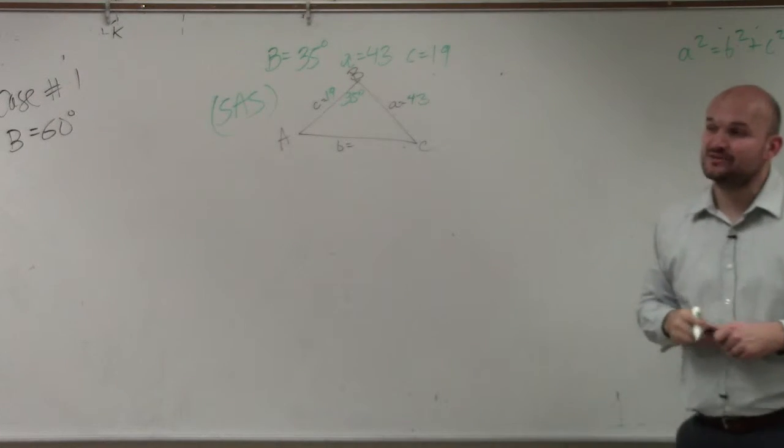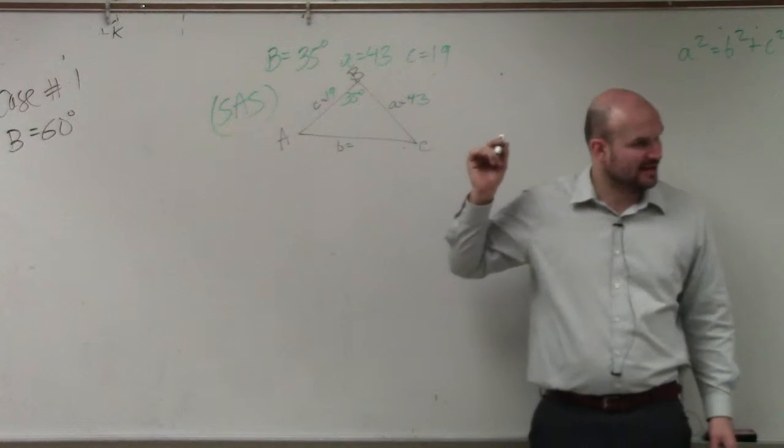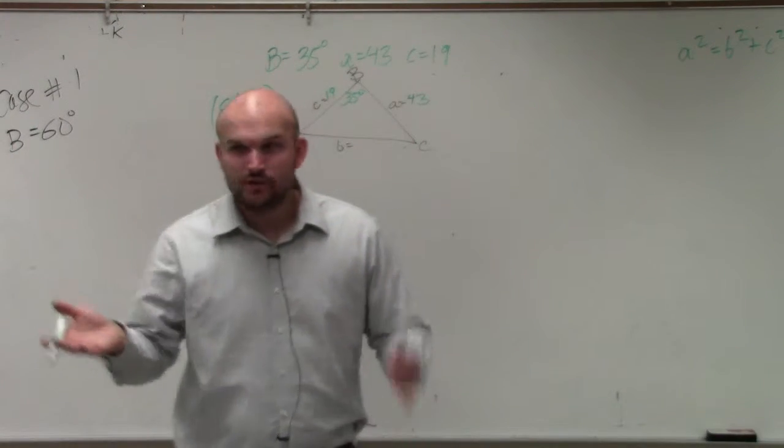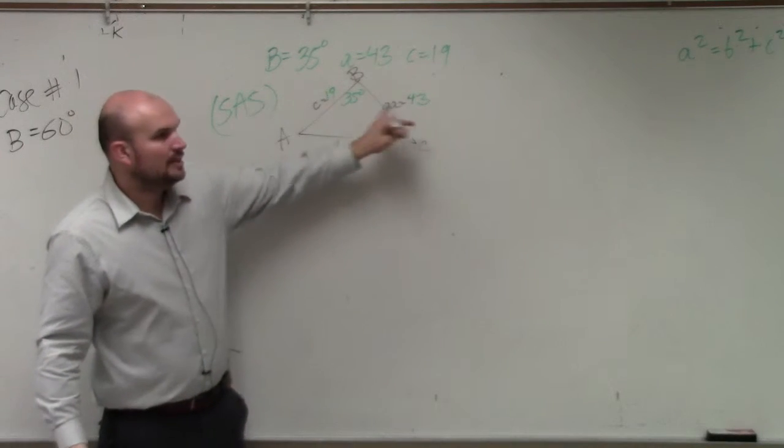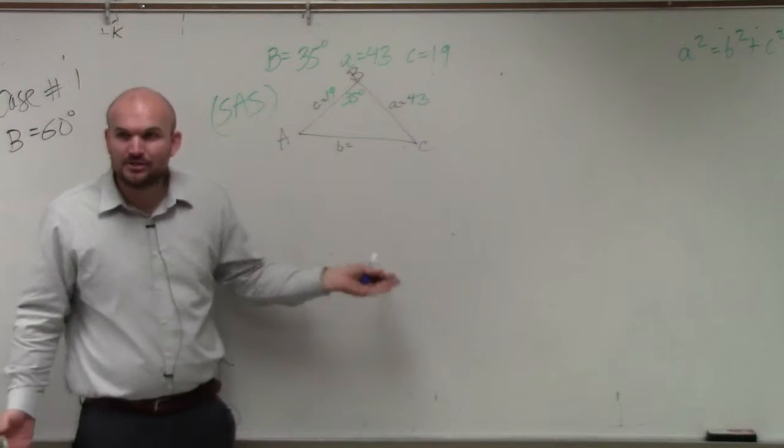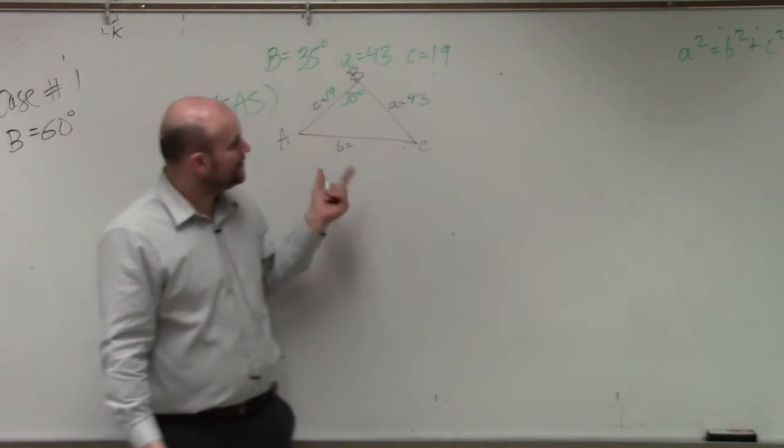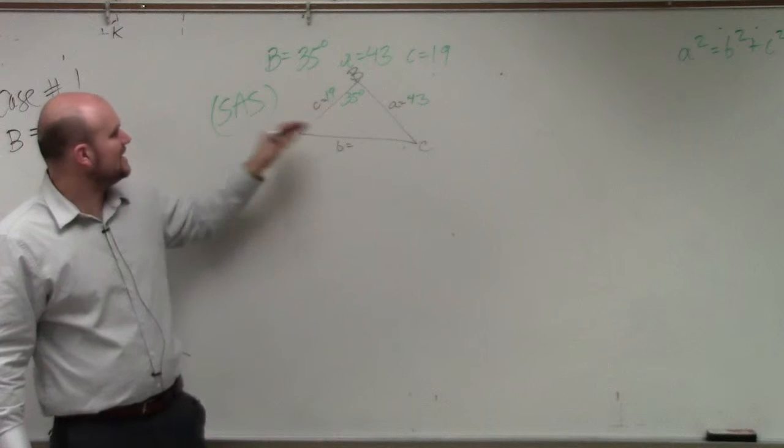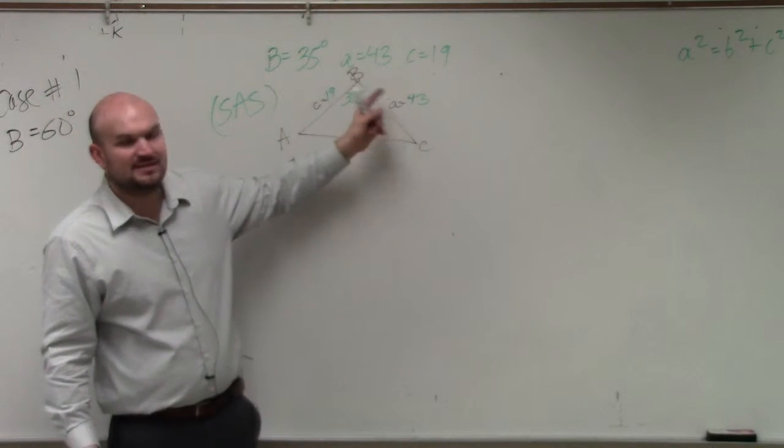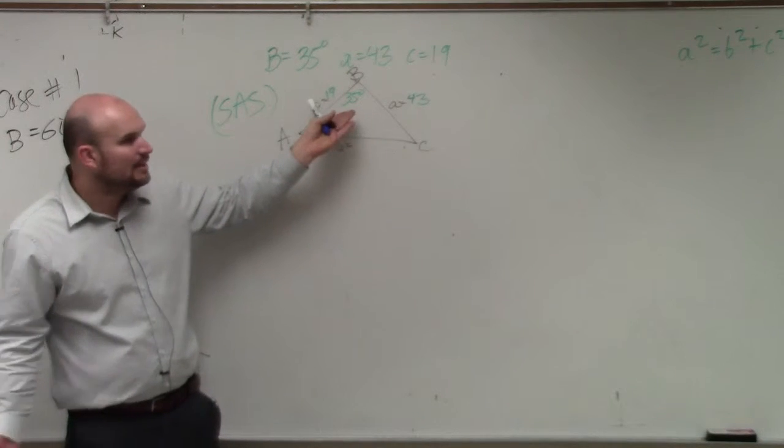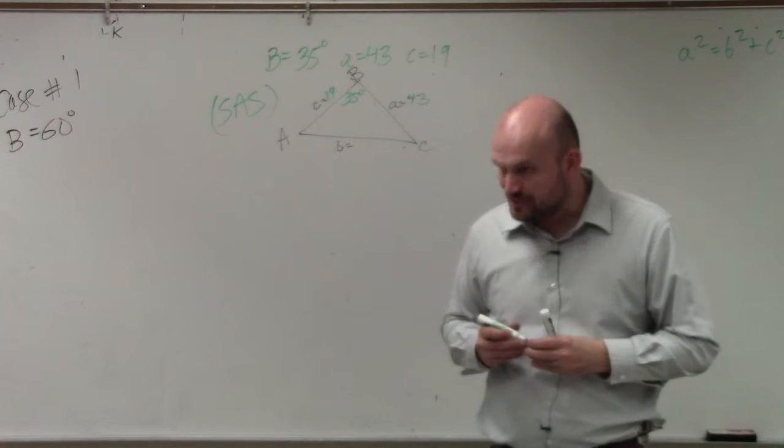And what you guys notice for side-angle-side, we can't do the law of sines for side-angle-side. To do the law of sines, you have to have a ratio. You have to have a ratio of an angle and its side length. But here, we don't have a ratio going on at all. We only have one angle, we don't even have enough information to do that. So therefore, we're going to use the law of cosines.